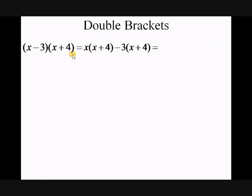When we do that it looks like this: x times (x plus 4) and minus 3 times (x plus 4), remembering the sign. That turns it into two lots of single brackets. When I multiply the first one out I get x squared plus 4x — x times x is x squared, x times 4 is 4x.